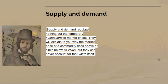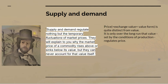Of this, Marx says: supply and demand regulate nothing but temporary fluctuations of market prices. They explain why the market price of a commodity rises or falls below its value, but they can never account for that value itself. You should never mistake the exchange value of a commodity with its value — they're quite distinct things. Price, which equals exchange value, which is the value form, is quite distinct from value. It's only over the long run that value, set by the conditions of production, regulates price. Day to day you're dominated by short-term movements of supply and demand — and in the case of something like gas, it is literally supply and demand: the supply is gas flowing down pipelines from the North Sea, and the demand is the amount being burnt at that moment.